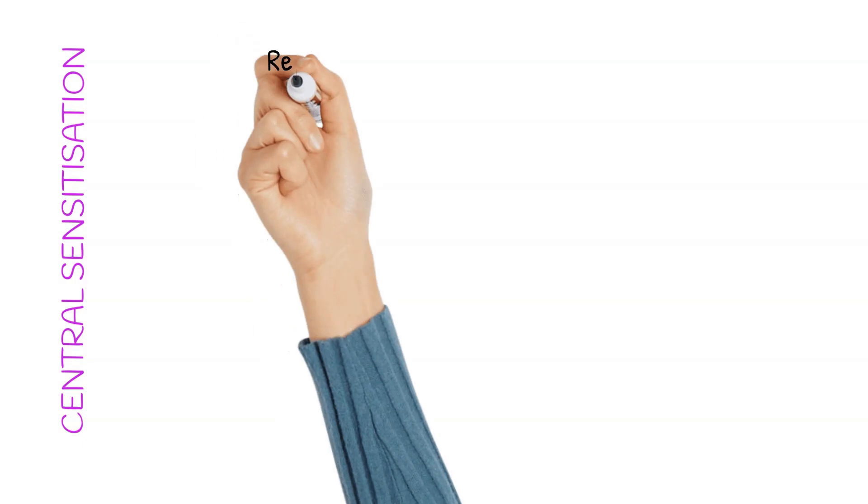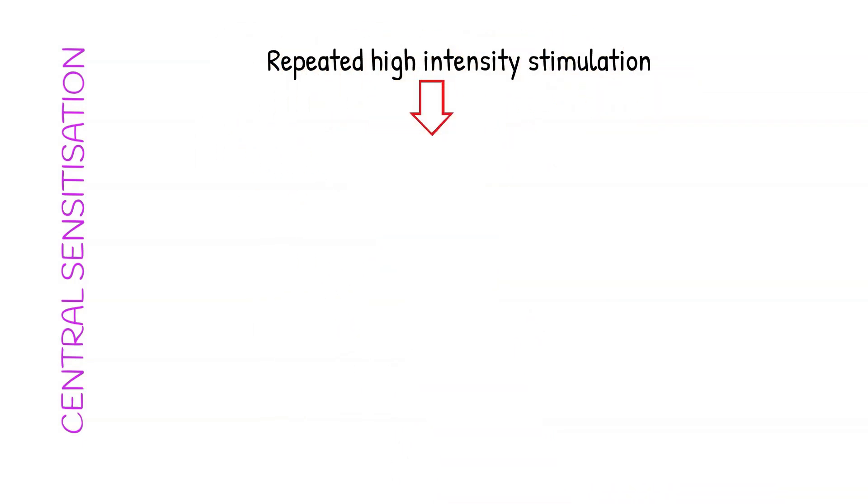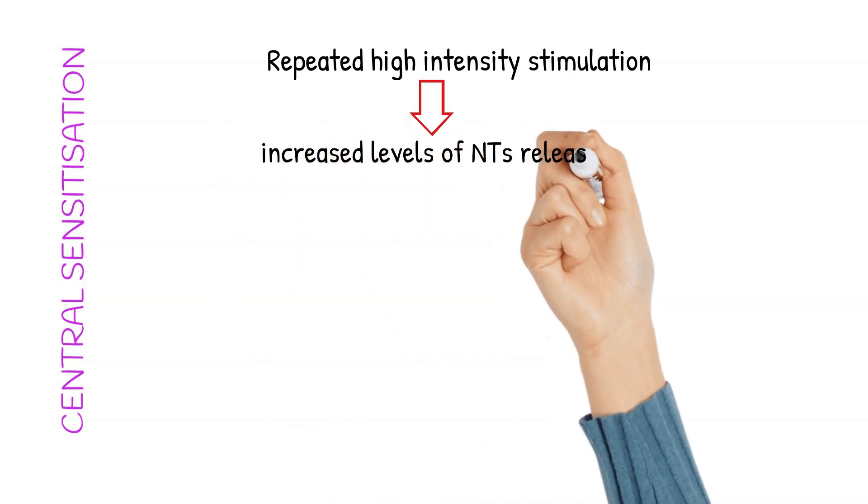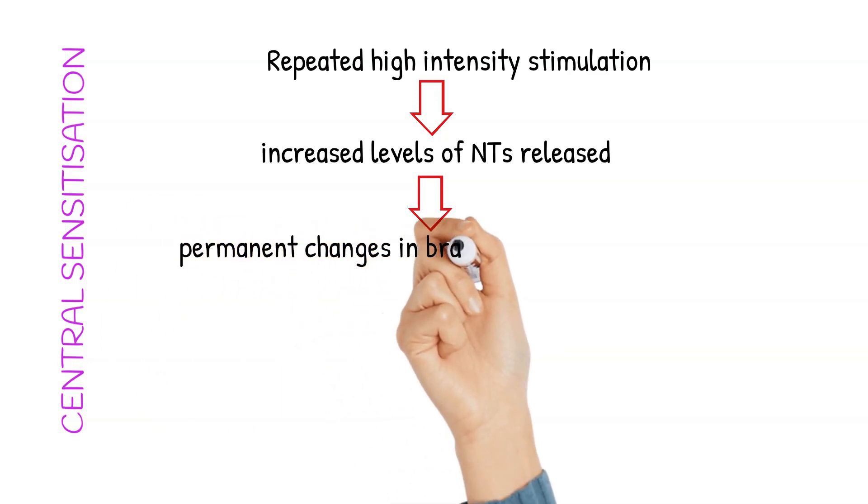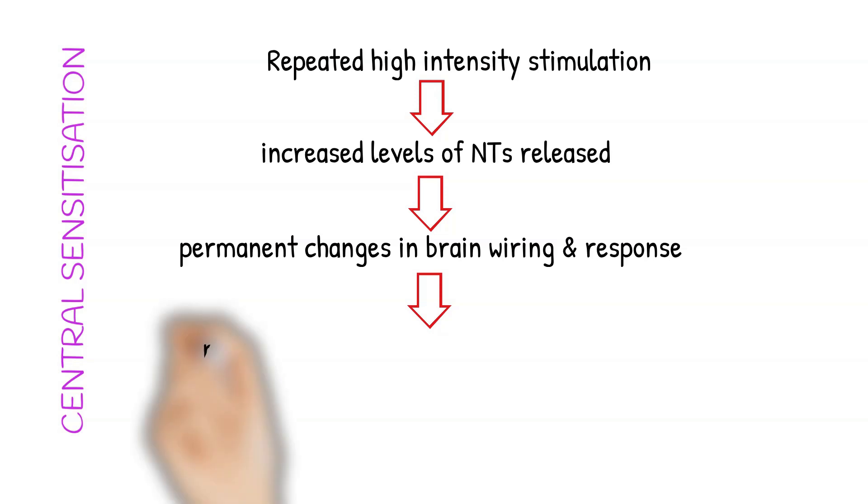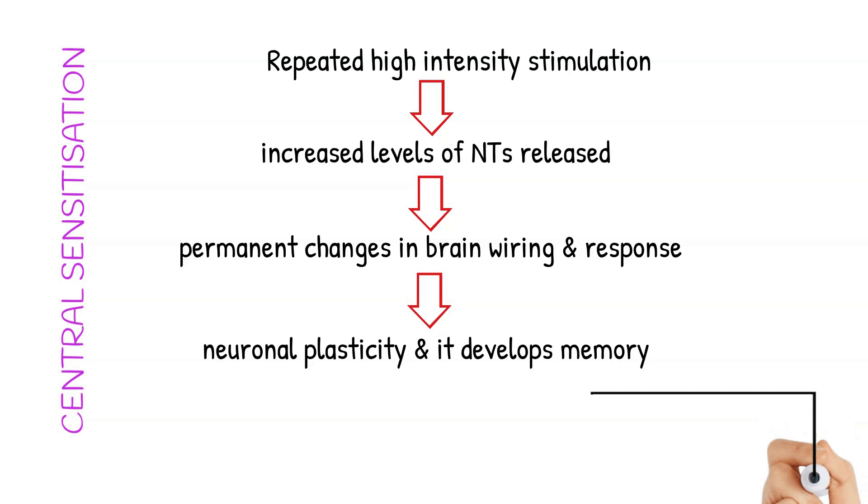The pathology behind hyperalgesia and allodynia is not just limited to the primary efferent neuron. It also extends to the second-order neuron located in the dorsal horn and also to the brain. So this is something called central sensitization. So let's see what happens here. On repeated exposure to high-intensity stimulation, there is increased release of neurotransmitters and this causes permanent changes in the brain wiring and response resulting in neuronal plasticity and development of memory. Because of development of neuronal plasticity and memory, the patient experiences pain even in the absence of noxious stimuli. This is what happens in neuropathic pain. The main culprit behind the neuropathic pain is believed to be the neurotransmitter glutamate.